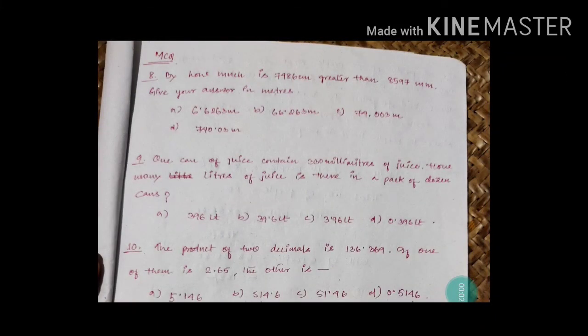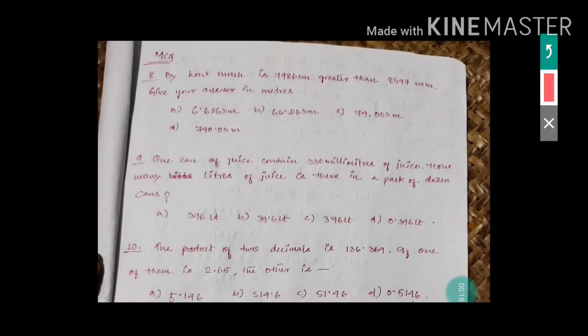Question number 8: by how much is 7,486 centimeters greater than 8,597 millimeters? Give your answer in meters. First of all, you have to see which one is greater and by how much. Without converting, don't simply subtract one from the other — if you do that, you will get the wrong answer. Don't do it like that.